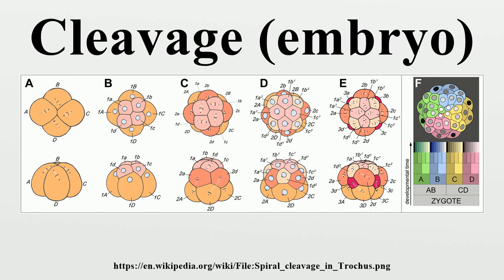Spiral: Spiral cleavage is conserved between many members of the Lophotrochozoan taxa, referred to as Spiralia. Most Spiralians undergo equal spiral cleavage, although some undergo unequal cleavage. This group includes annelids, molluscs, and Sipuncula. Generally, the first two cell divisions result in four macromeres, also called blastomeres, each representing one quadrant of the embryo. These first two cleavages are oriented in planes that occur at right angles parallel to the animal-vegetal axis of the zygote.